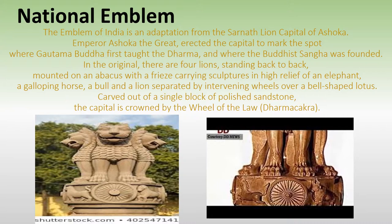The abacus carries sculpted reliefs in high relief of an elephant, a galloping horse, a bull, and a lion, separated by intervening Dharma wheels. The whole is carved out of a single block of polished stone, and the capital is crowned by the wheel.